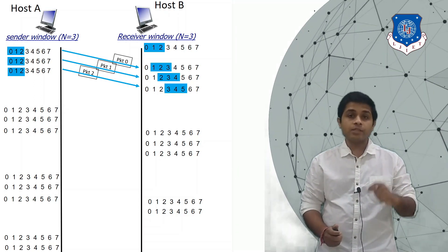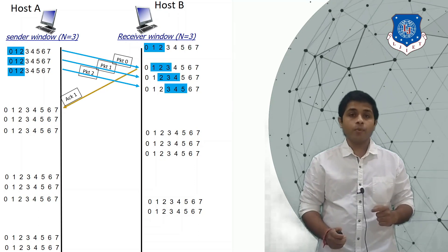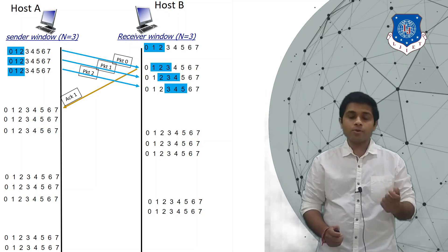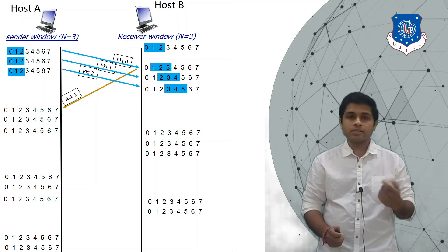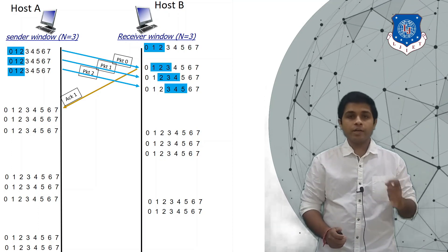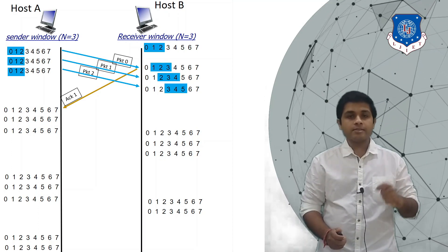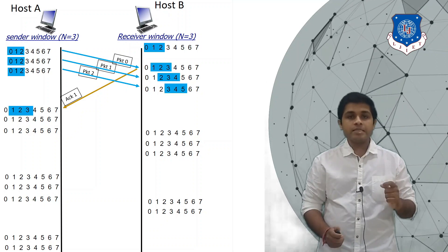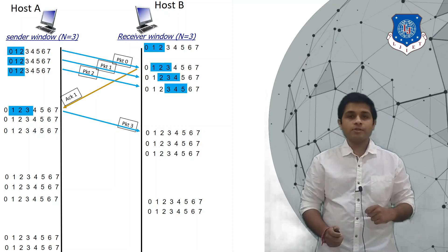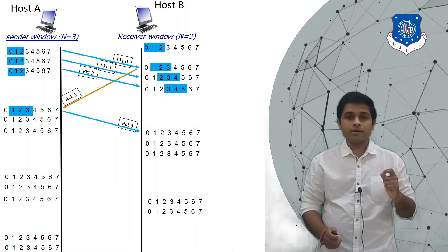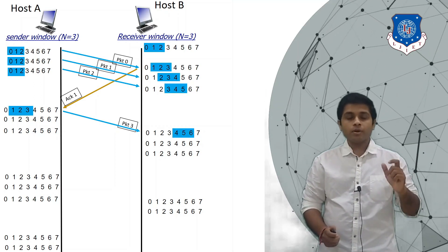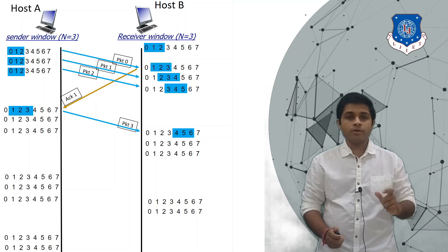After some time B will send the acknowledgement for received packet 0, that is ACK 1. As A receives ACK 1, it finds that packet 0 is received successfully, so now it has to send the next packet. The window at the sender's side will slide and A will send the next packet, which is packet 3. As B receives packet 3, the window at B's side will slide.